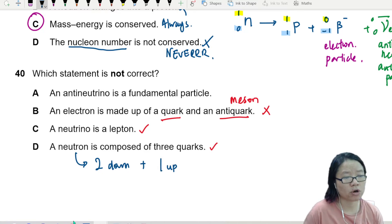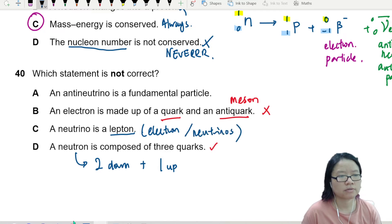Neutrino is a lepton. So when you see lepton, there are two types. It's either electron or neutrinos. Either one, so this is also correct.